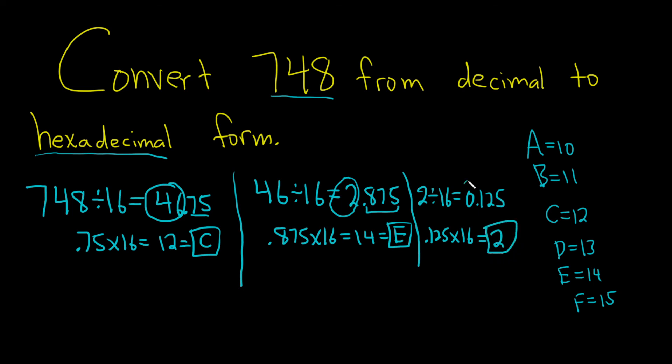And you stop because this part is 0. You just keep dividing by 16 until you get to a whole number part of 0. Now you write the answer down backwards: 2EC. And this is in base 16, and this is equal to 748 in base 10. I hope this video has been helpful. Good luck.